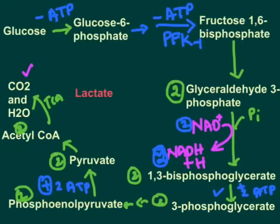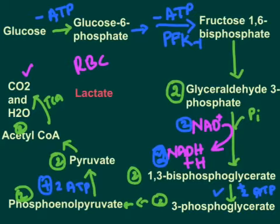In red blood cells, which do not have mitochondria, or in cells lacking oxygen — such as strenuously exercising skeletal muscle or the retina — the fate of pyruvate is different. In these cells, pyruvate must be converted into lactate. What is the reason for this?